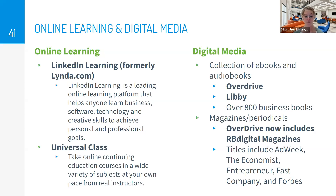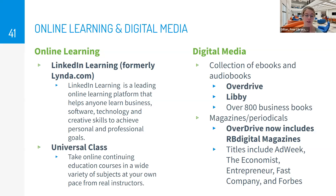Digital media highlights include OverDrive and its sister app Libby — they're used interchangeably. Access and download ebooks, magazines, and audiobooks from OverDrive and Libby. There are over 800 business books in here, and when I looked recently there were over 600 currently available business books. RB Digital Magazines, which we had previously, is now part of the OverDrive family, so OverDrive now offers popular back and current issues of magazines. Things like Ad Week, The Economist, Entrepreneur, Fast Company, and Forbes are available here, as well as some more fun magazines.